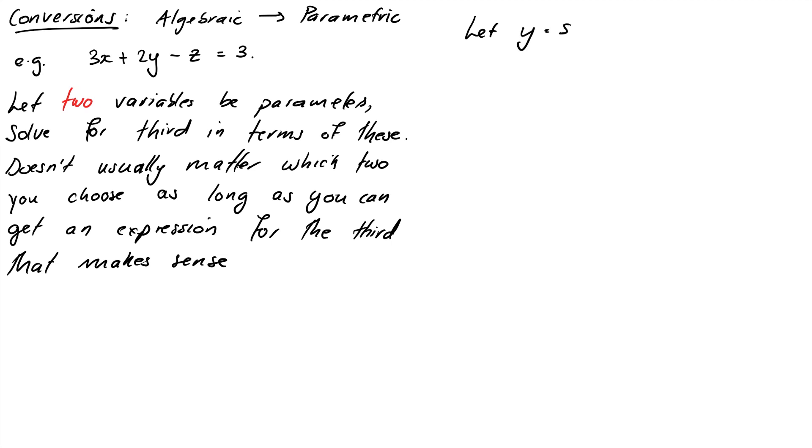It often doesn't matter which ones you choose so long as you can still get an expression for the remaining variable that makes sense. So I'm going to say, let Y equal S and Z equals T. Then I'm going to solve for X. So X, if I rearrange my equation, is 1, that's 3 over 3, minus 2 thirds Y plus 1 third Z. Now I'm going to put my Y equals S and Z equals T in. So that equals 1 minus 2 thirds S plus 1 third T.